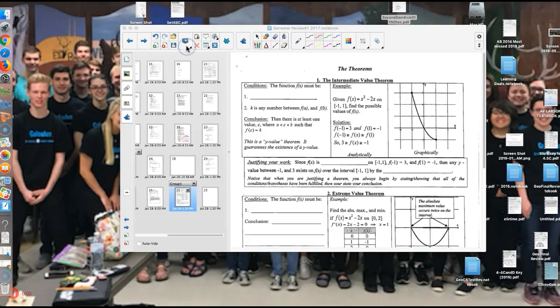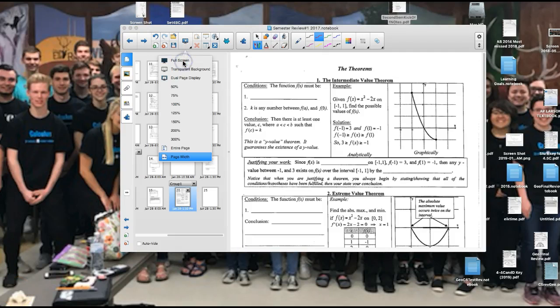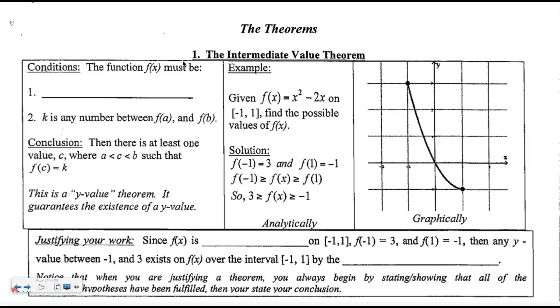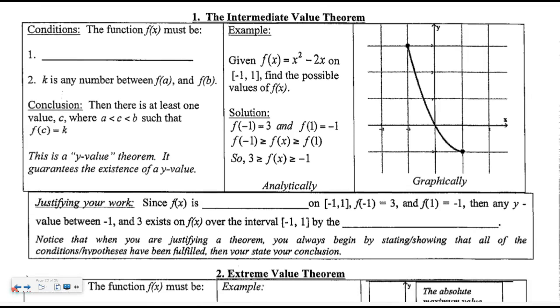These are recap notes on what I like to call the existence theorems. We'll have the Intermediate Value Theorem, the Extreme Value Theorem, and the Mean Value Theorem. I found this display online. There's a few small details with it but not enough worth retyping the whole thing. So just watch as we go, we'll fill it in together. The first thing we're going to discuss is the Intermediate Value Theorem, which you can abbreviate as IVT.